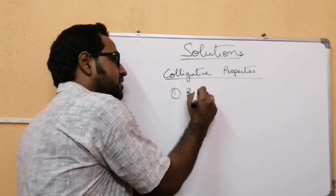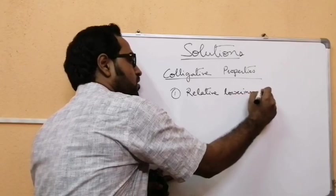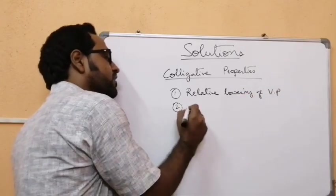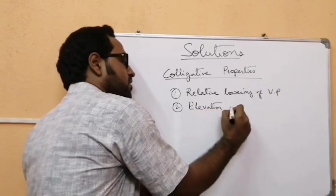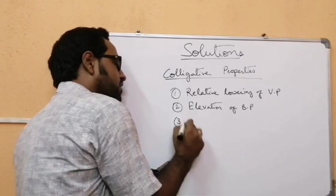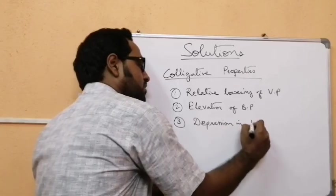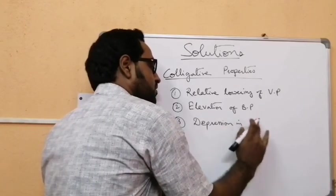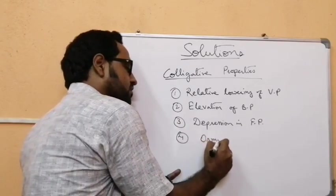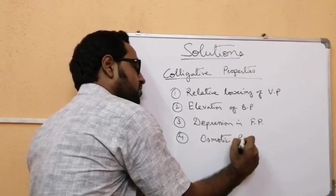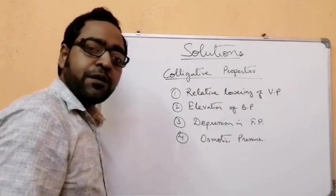There are four colligative properties which we have to study. The first one is relative lowering of vapor pressure, the second one is elevation of boiling point, the third one is depression in freezing point, and the fourth one is osmotic pressure.